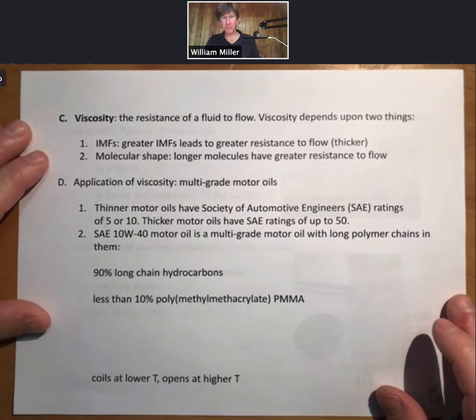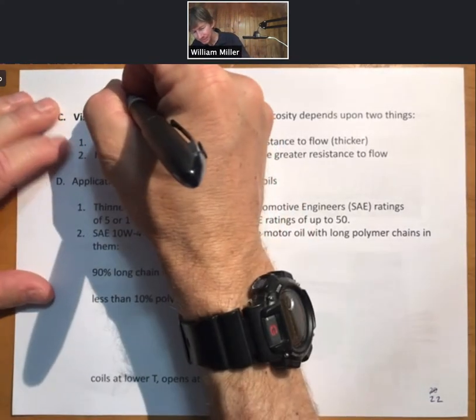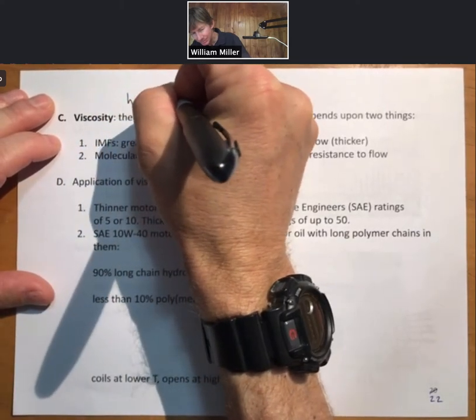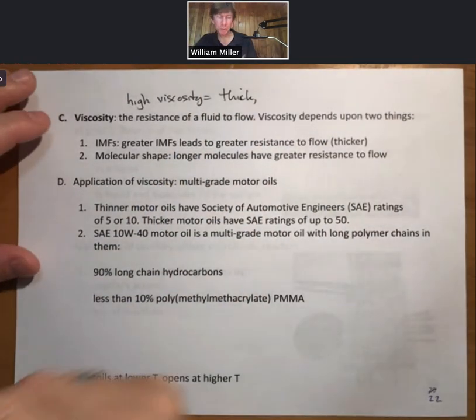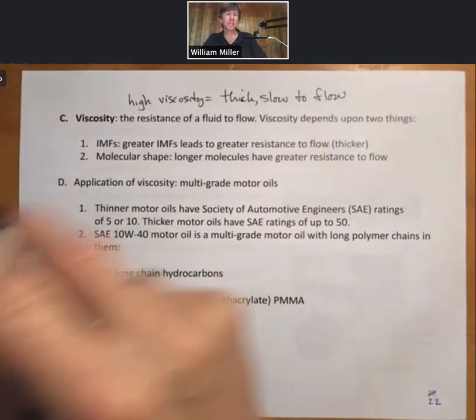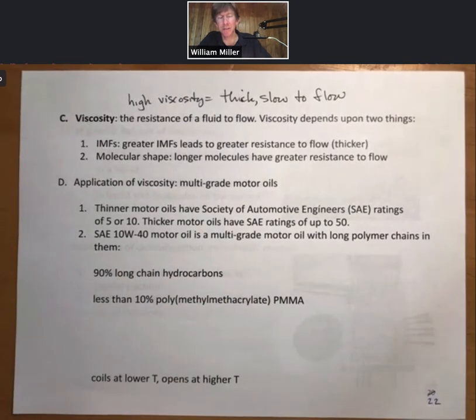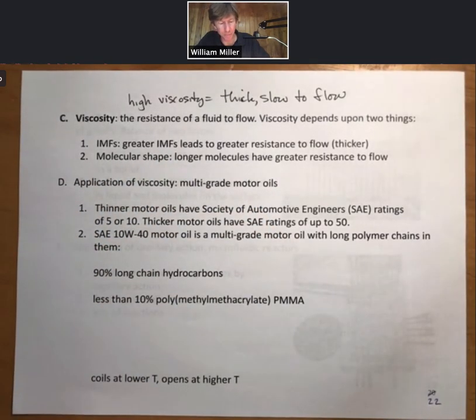Another interesting property, viscosity, the resistance of a fluid to flow. High viscosity means thick substances or slow to flow substances. Maple syrup is one example. Oil, which we're about to talk about, is thicker than water. And IMF, greater IMFs lead to greater resistance to flow, so thicker. And longer molecules have greater resistance to flow as well.